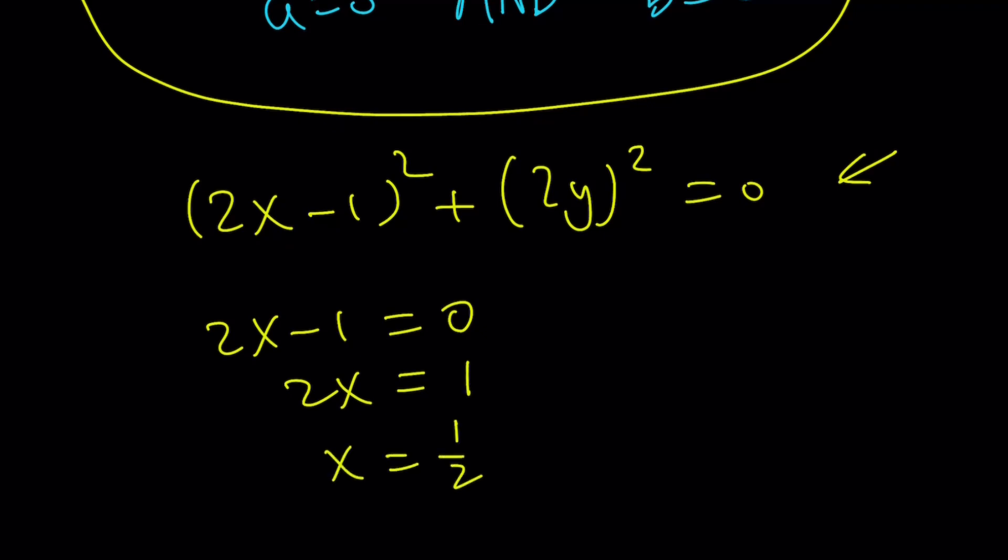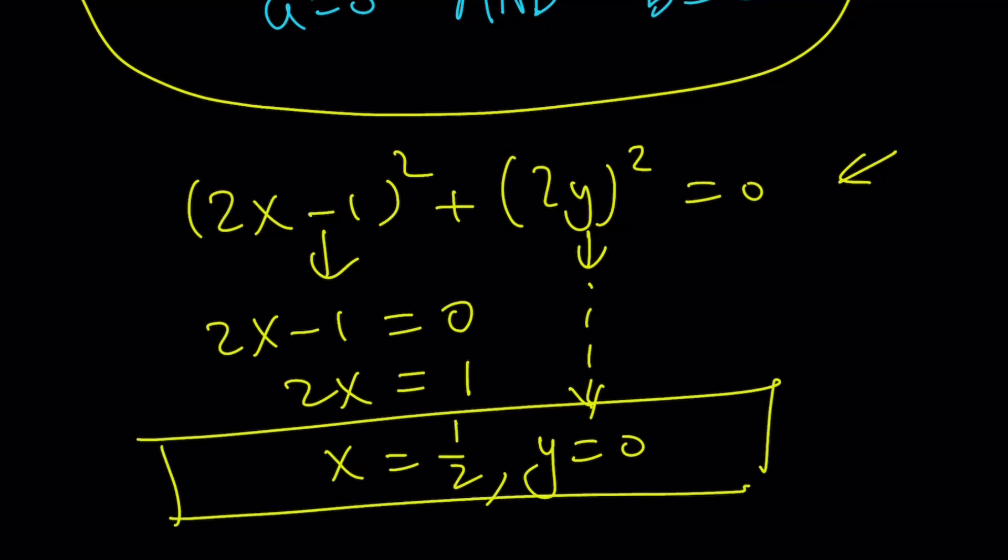2x - 1 = 0 and from here, I get 2x = 1 and x = 1/2. And from here, we get y = 0. That gives us the only real solution pair to this equation.